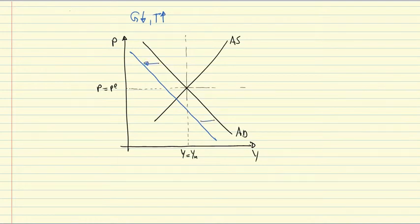That means that AD shifts towards the left here and we get an equilibrium that is below the natural level of output. So Y is less than YN and P is less than PE.